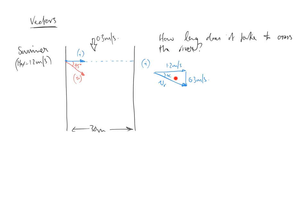That's a right-angle triangle, so we have simple trigonometry. V resultant squared is going to equal 1.2 squared plus 0.3 squared. So V resultant is going to be the square root of 1.2 squared plus 0.3 squared, which gives me a speed of 1.24 meters per second. So they are moving faster than they were if there was no current flowing.